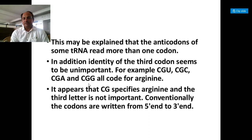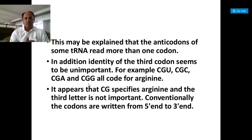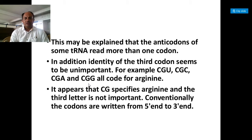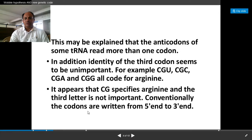How is this happening? That can be explained: the anticodons of some tRNAs read more than one codon. Because if there are 61 codons and if you are considering one transfer RNA for one codon, there should be 61 transfer RNAs. But that is not the case — there are less than 61 tRNAs — and it means that the anticodons of some tRNAs read more than one codon. In addition, the identity of that third base of the codon is unimportant.